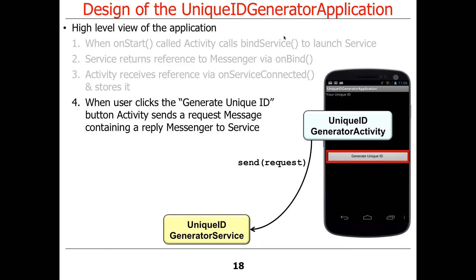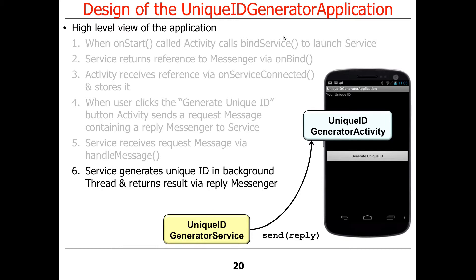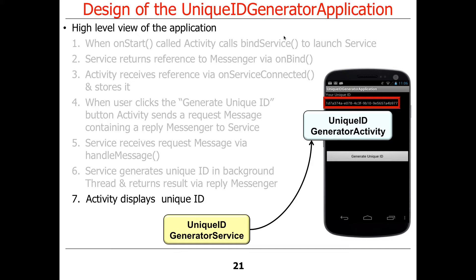Once the binding is done, when you click the button to generate a unique ID, that causes a message to be sent via the messenger that was passed back by the onServiceConnected hook method. That goes to the service and is handled by the handleMessage method. It generates a unique ID in the background and sends a reply back to the activity, which then displays the ID. That's basically the steps involved at a high level.